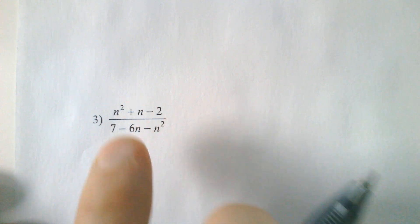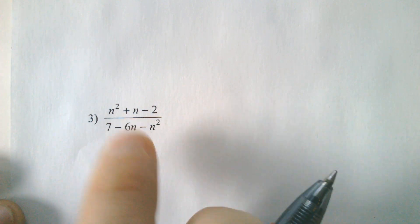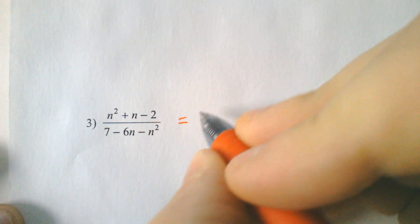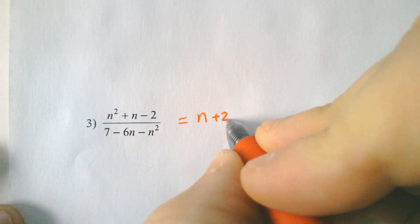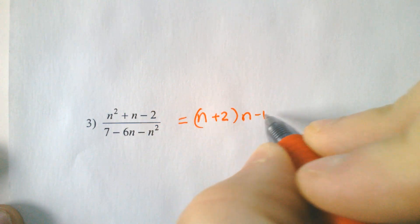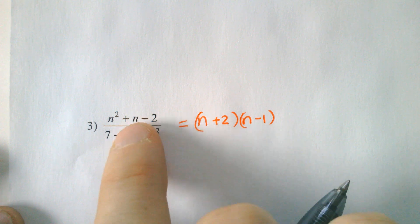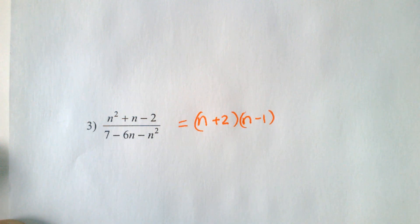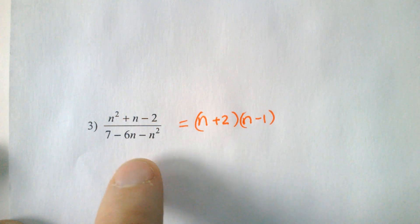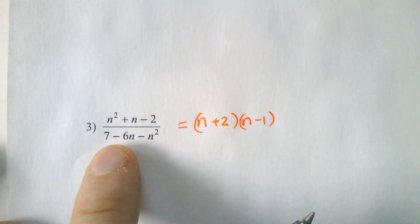A variation of that is going to be like on number 3. On number 3, the top of the fraction, no problem. n plus 2, n minus 1. It multiplies to negative 2 but adds to positive 1. On the bottom of the fraction, I don't like it. I hate this negative n squared. It feels backwards.